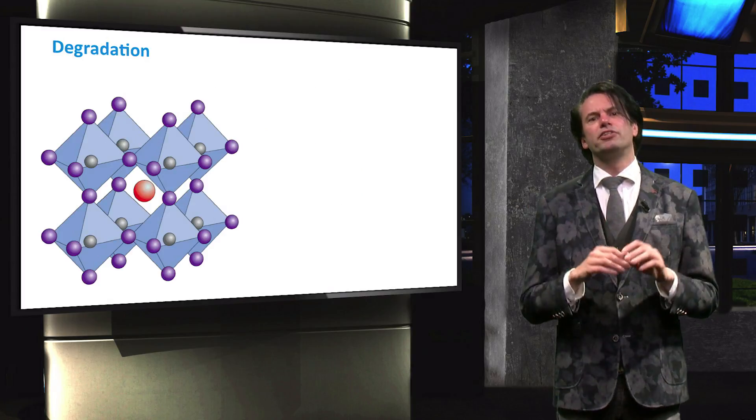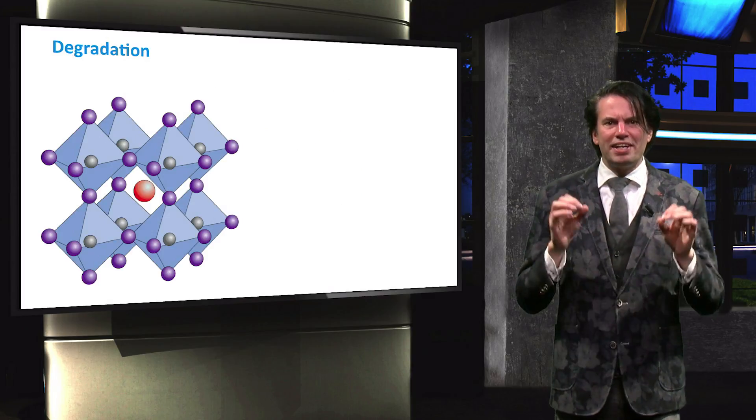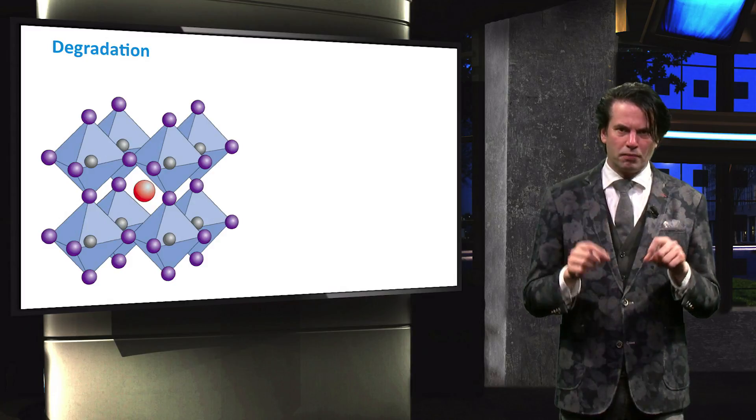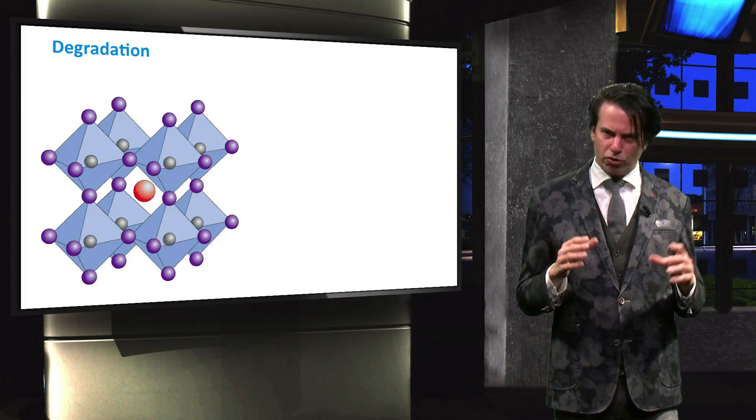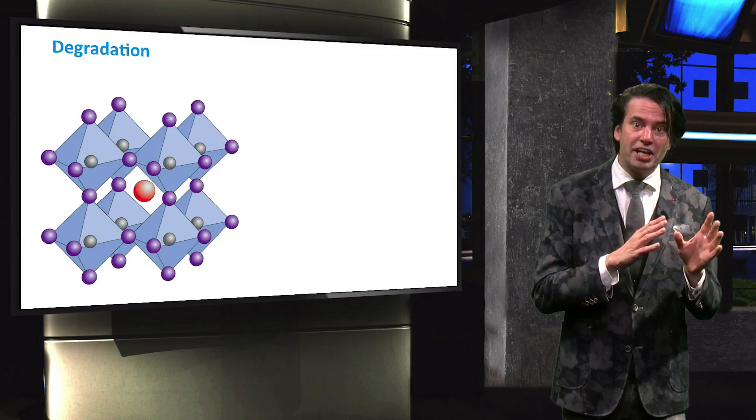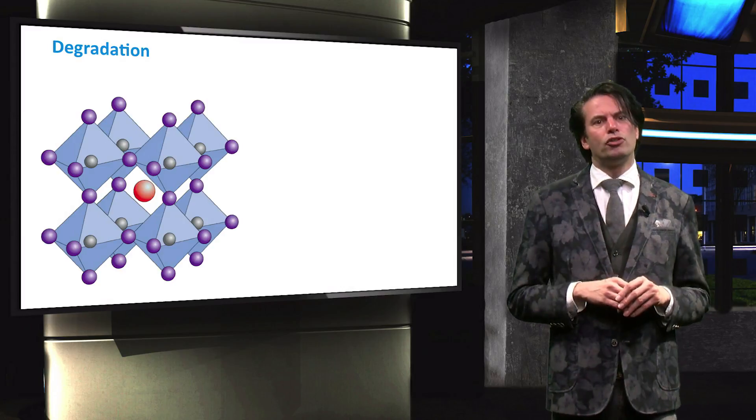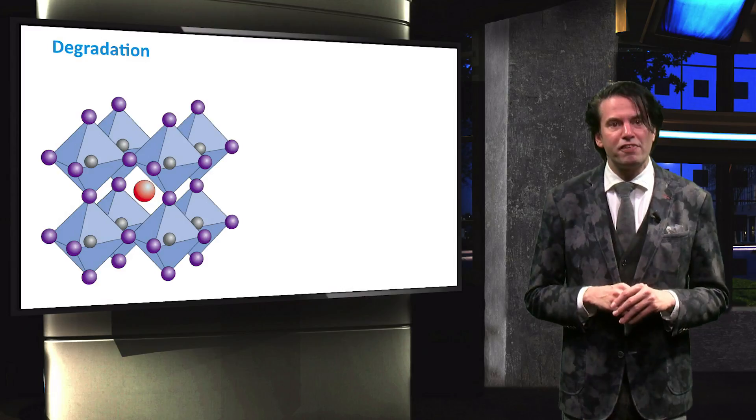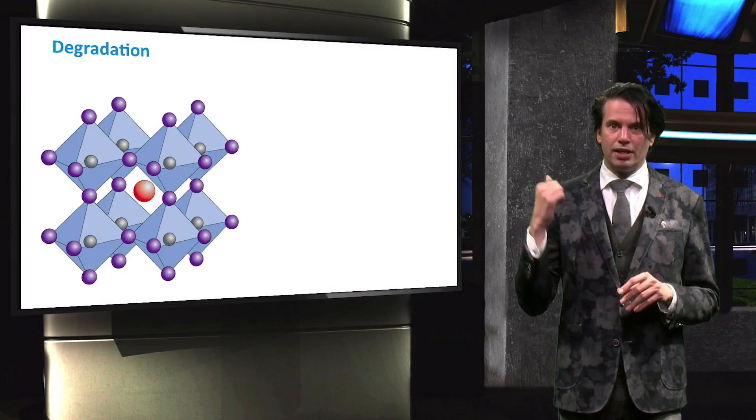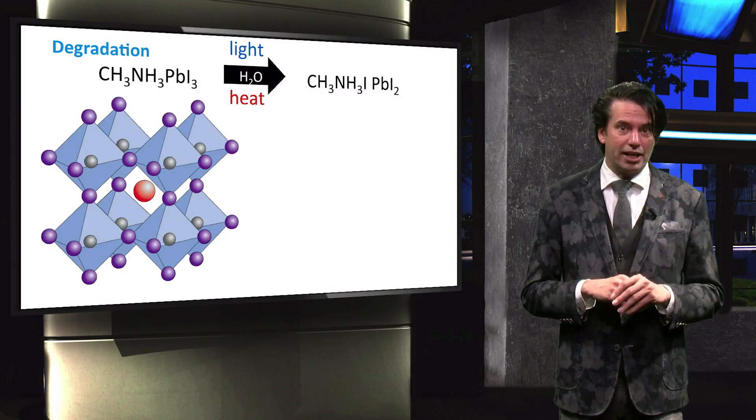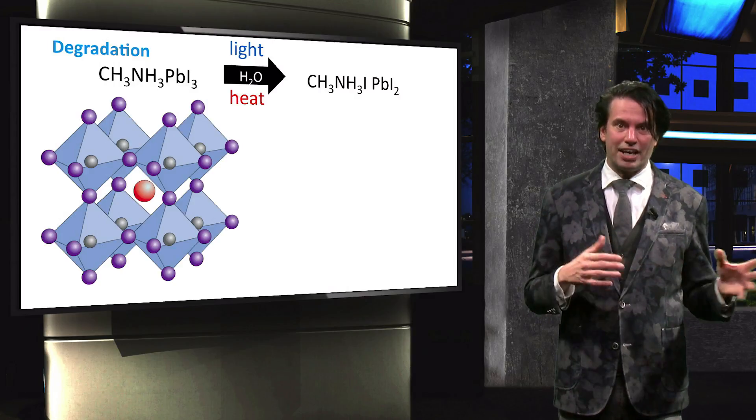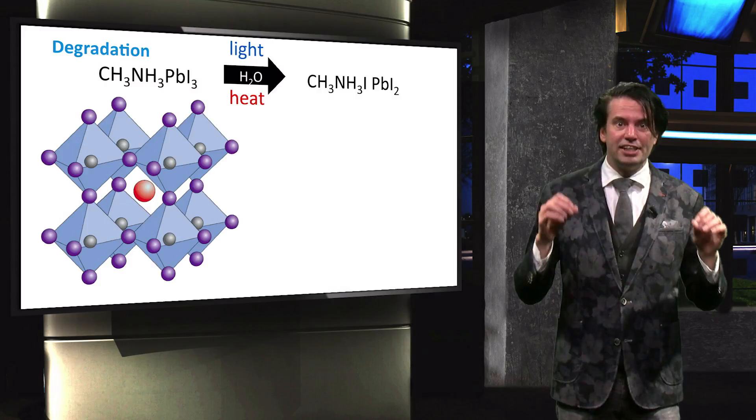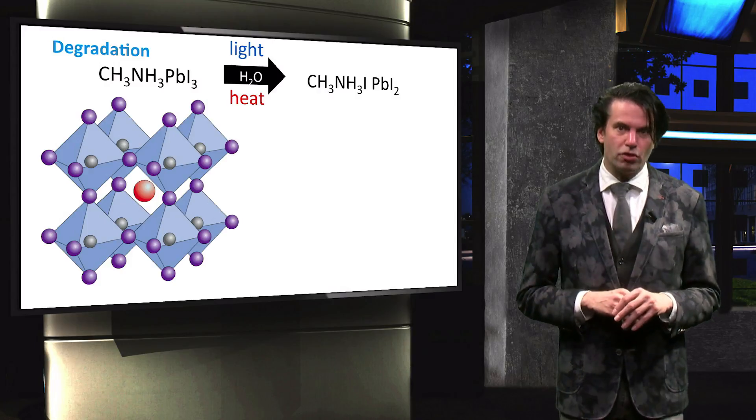The perovskite materials can be decomposed when exposed to humidity. The presence of water can accelerate the chemical degradation of the perovskite phase under illumination and heat. The structure of the lattice can be significantly modified. The lead atom and the two iodine atoms form a molecule that becomes an interstitial entity in the lattice, deteriorating the electro-optical properties of the materials.